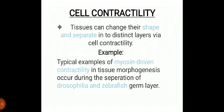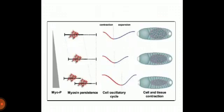The next mechanism is cell contractility. Tissues can change their shape and separate into distinct layers; this is called cell contractility. Just like in muscle cells, myosin can contract different parts of the tissues to change their shape or structure. A typical example of myosin-driven contractility in tissue morphogenesis occurs during the separation of Drosophila and zebrafish germ layers. In the diagram, a myosin-persistence cell oscillatory cycle is shown, in which contraction and expansion take place, producing cell and tissue contractions.